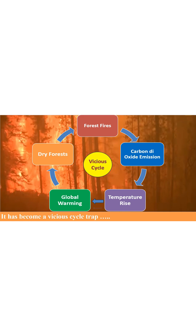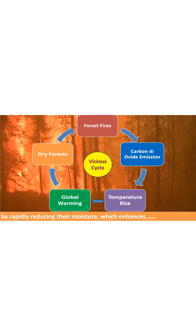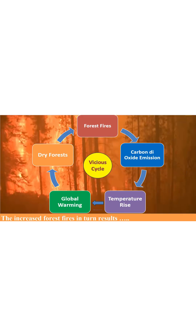It has become a vicious cycle trap. Global warming creates dried out vegetation, dry leaves, dry dead grasses and dry tree barks by rapidly reducing their moisture, which enhances the possibility of frequent and bigger forest fires. The dried-up vegetation acts like a giant mass of kindling.